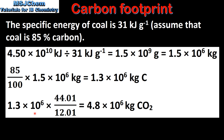To find the mass of carbon dioxide produced from the combustion of this mass of carbon, we multiply the mass by the molar mass of carbon dioxide divided by the molar mass of carbon. This gives us 4.8 times 10 to the 6 kilograms of carbon dioxide.